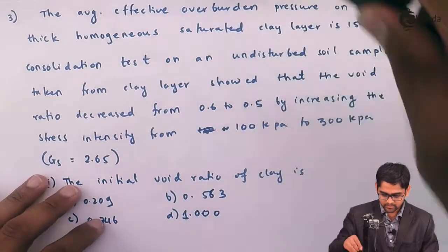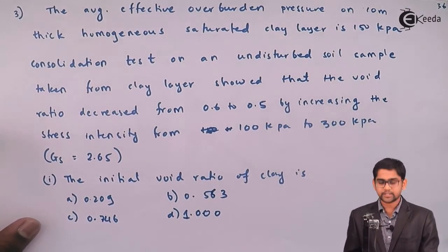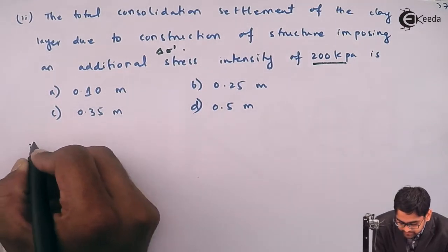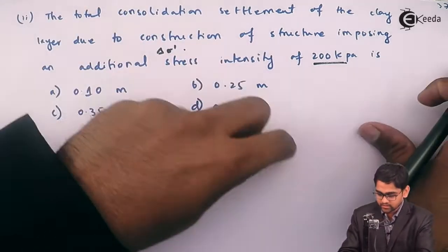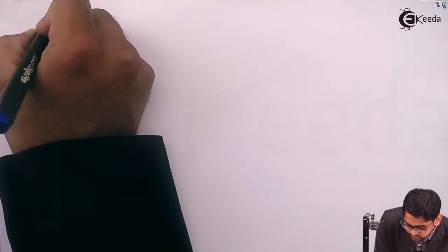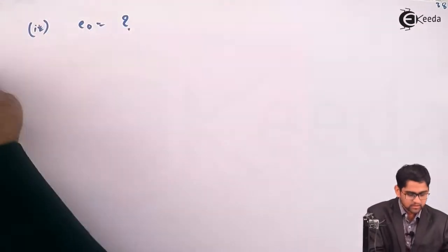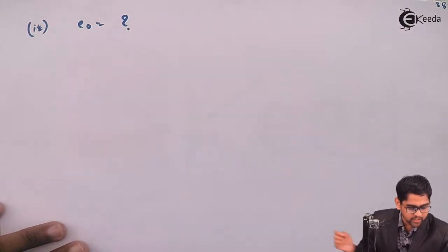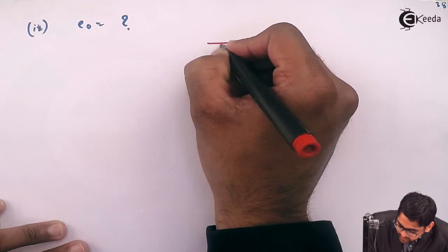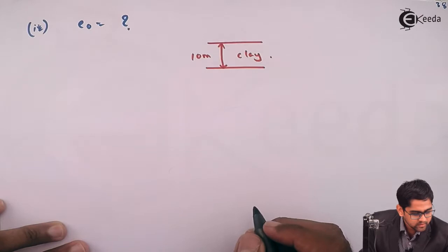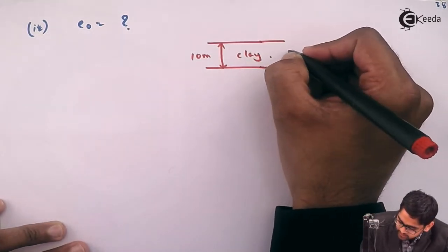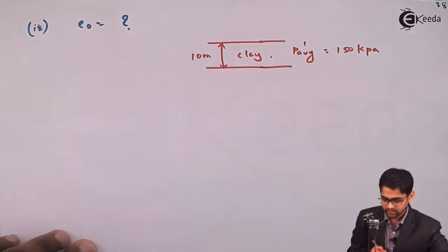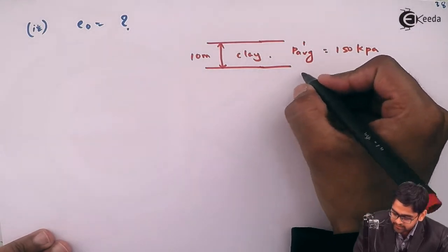For the first part, they have asked us to evaluate the initial void ratio of the clay, which is the e₀ value. The average vertical overburden pressure on the 10-meter thick clay layer is given as 150 kilo Pascals. This is the existing field condition — I call it the initial condition.